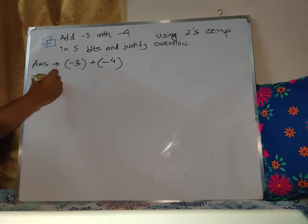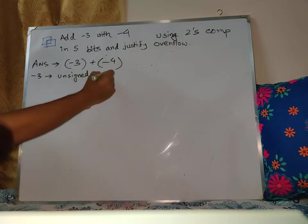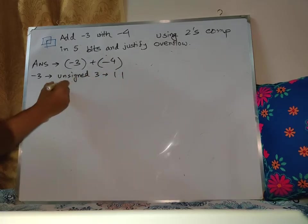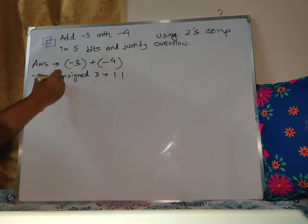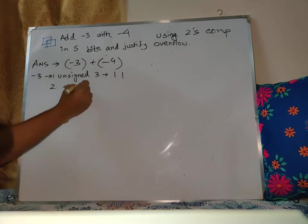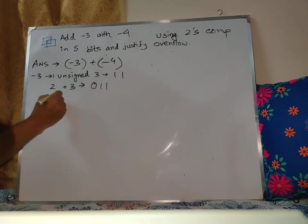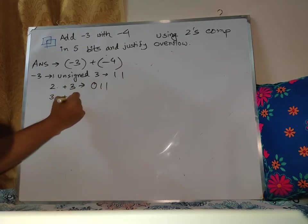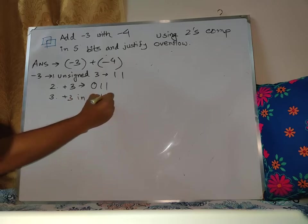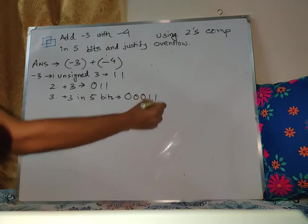So first number minus 3. First, unsigned 3 in binary is 1, 1. Then step 2: plus 3 is 0, 1, 1. Then the next step: plus 3 in 5 bits is 0, 0, 0, 1, 1.